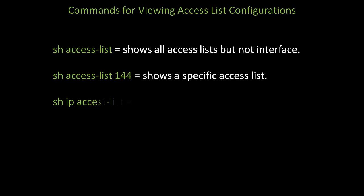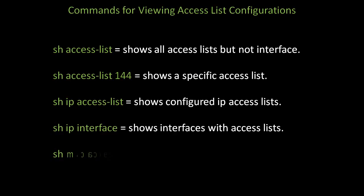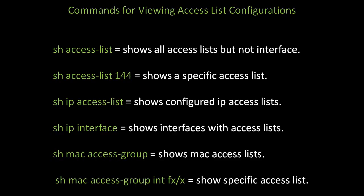Finally, here are some commands for viewing access list configurations. Use show access-list to show all access lists, but not the interface they're applied to. Use show access-list followed by a number to specify a particular access list. Use show ip access-list to show configured IP access lists. Use show ip interface to show interfaces with their access list applied. Use show mac access-group to show MAC access lists. And use show mac access-group with a specific interface or port to show a specific access list attached to that port.